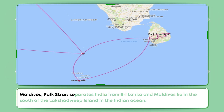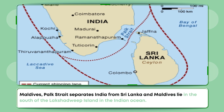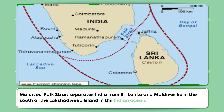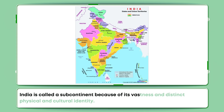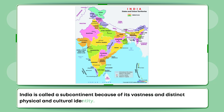Palk Strait separates India from Sri Lanka, and Maldives lie to the south of the Lakshadweep Islands in the Indian Ocean. India is called a subcontinent because of its vastness and distinct physical and cultural identity.